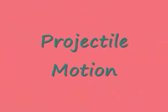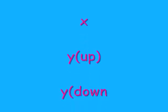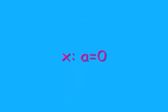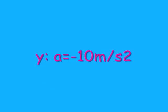Our first topic of kinematics is projectile motion. For projectile motion, you have to divide your data into x, y up, and y down columns in your chart. Next, you need to plug in your givens. For the x, you know the acceleration is equal to zero. And for y, you know the acceleration is equal to negative 10 meters per second squared, which is equal to gravity.